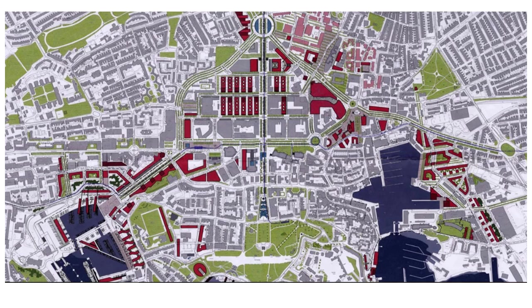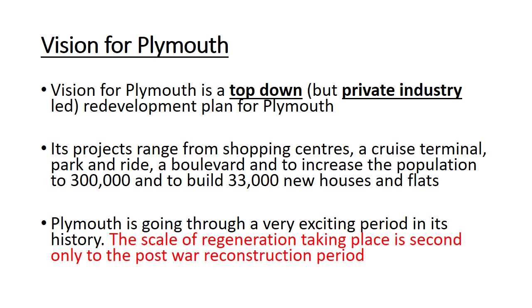The areas in red on this map are earmarked for redevelopment or regeneration throughout this project. For Vision Plymouth, you can see it's a city-wide project with a whole range of different activities — shopping centres, a cruise terminal, park and ride, etc. There's the idea to raise the population to 300,000 by 2030. It's a top-down redevelopment, meaning it's local government-led — not the residents doing it themselves, as you may have seen in the Dharavi example in Mumbai — driven by local government and private industry aiming to make a profit. The scale of redevelopment is second only to the post-war reconstruction period following the blitz.